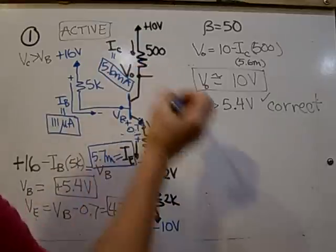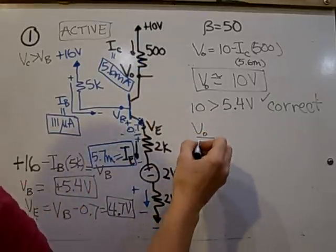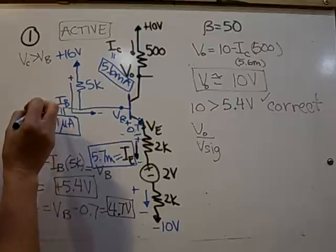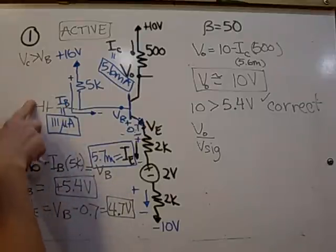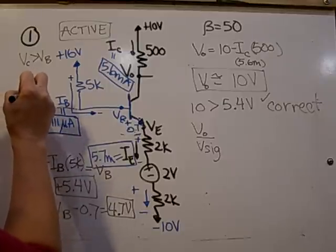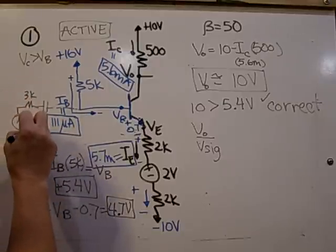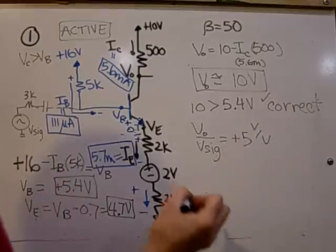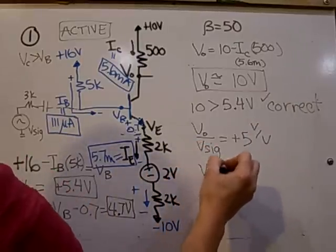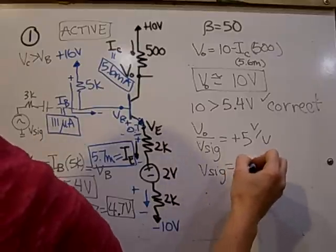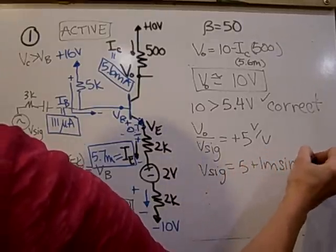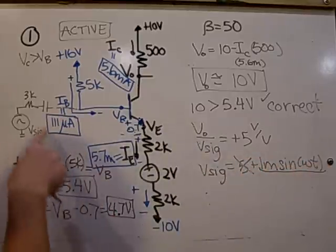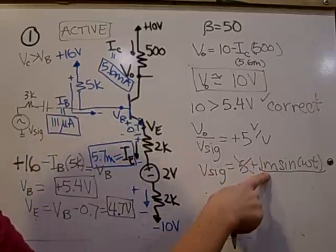Another part of this problem is if you're given the gain VO over the input Vsig. Recall that Vsig was attached here at the base as 3k and this was Vsig. So knowing and having that given as 5 volts per volt, also given Vsig is 5 plus 1 milli sine omega T. The DC part of it gets blocked by the capacitor, so the only part of this signal that goes through is the AC portion, and that's what's seen here. So this is the only thing that gets amplified.